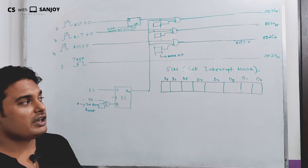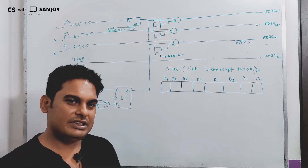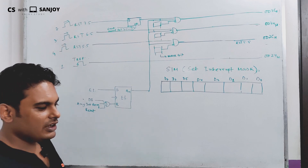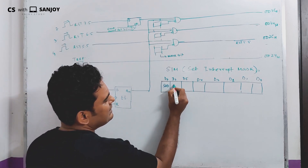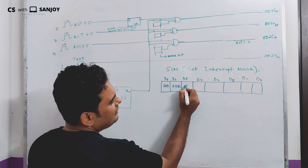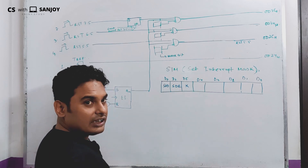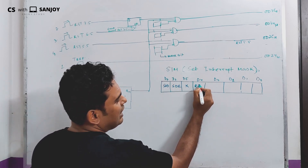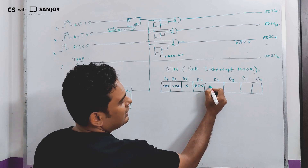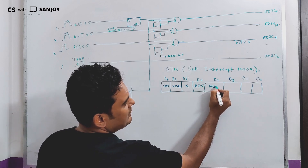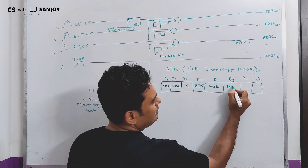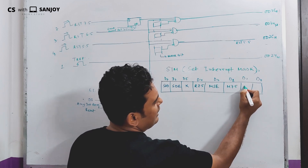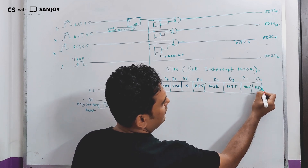These controls are: D7-bit is SOD (Serial Output Data Enable), D6-bit is SDE (Serial Data Enable), D5-bit is R7.5 (Reset 7.5), and D4, D3, D2 are MAC, M7.5, M6.5, and M5.5 respectively.